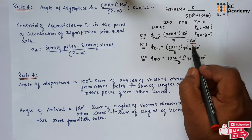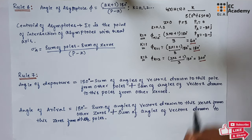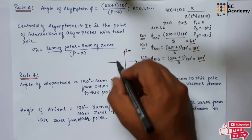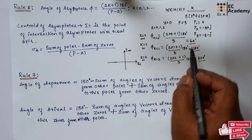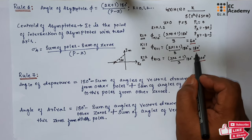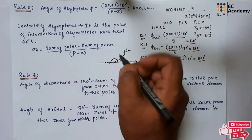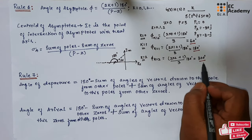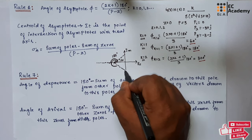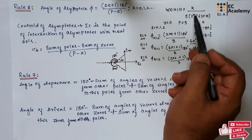So the angle of asymptote for K = 0 is 60°, for K = 1 it is 180°, and for K = 2 it is 300°. If we take the S-plane, the first asymptote is at 60°, the second at 180°, and the third at 300°. These are the three angles of asymptote for this example.